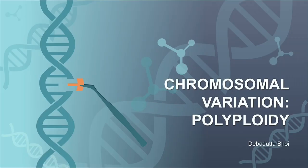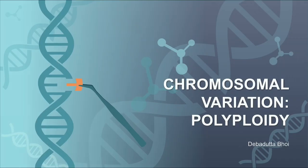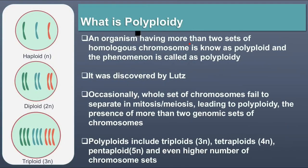Hello guys, welcome to another video on chromosomal variation. Today we will discuss polyploidy. If an organism has more than two sets of homologous chromosomes, it is known as a polyploid and the phenomenon is called polyploidy. It was discovered by De Vries.